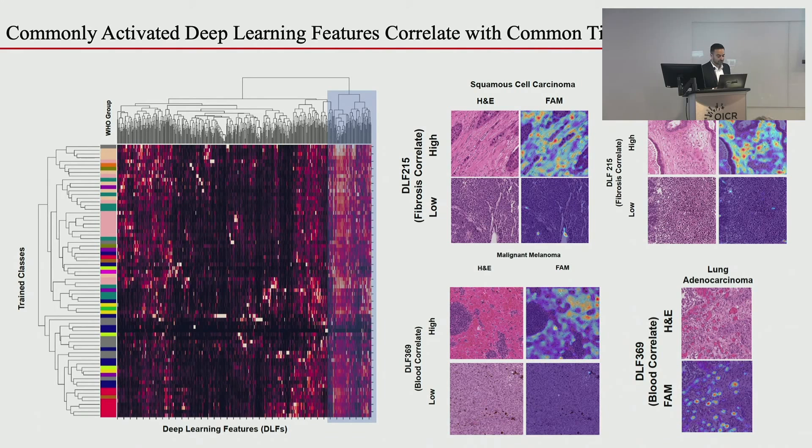Using a feature activation map — not a class activation map — specifically looking at feature 215 in these tiles, you can see it's leaving the tumor cells alone and focusing on the fibrosis around the tumor. When the tile has low feature 215, the network recognizes nothing in particular — it's pure tumor.